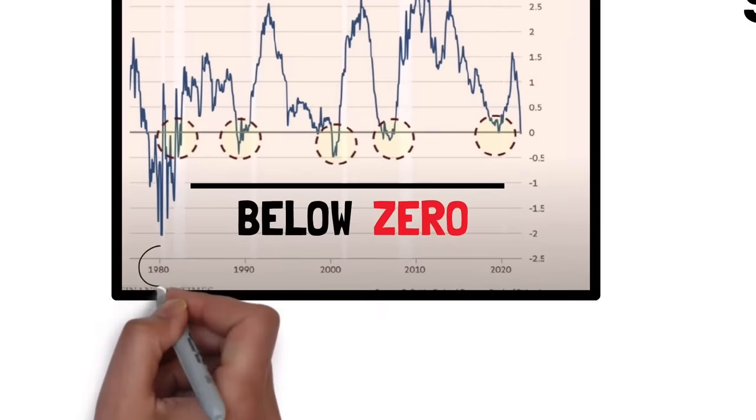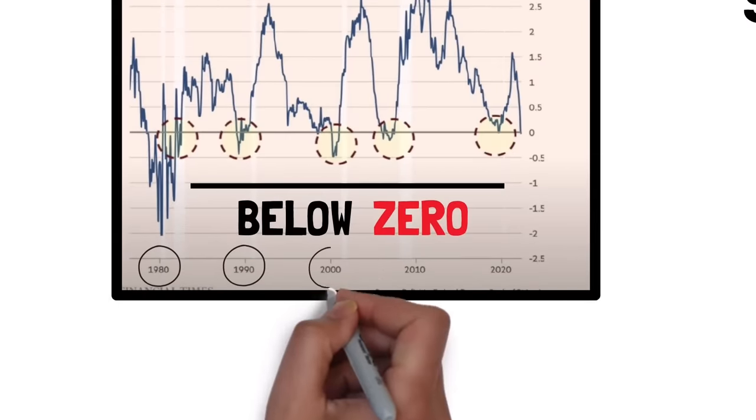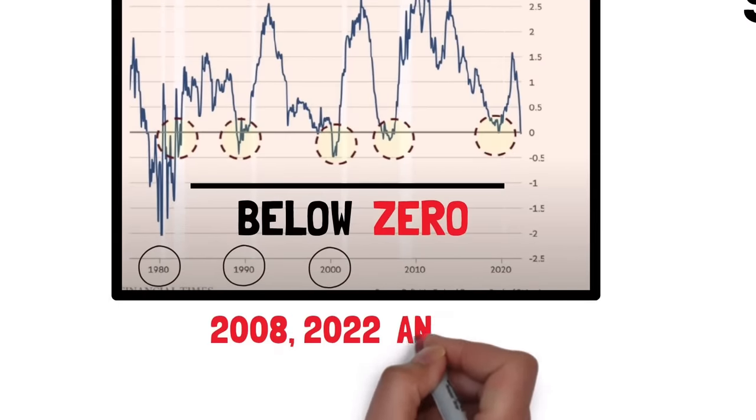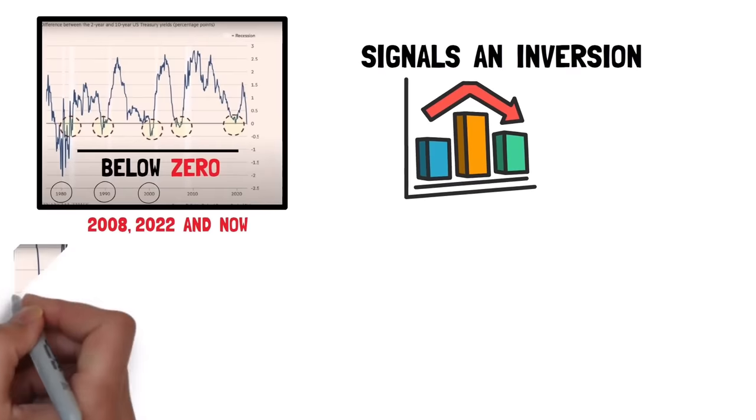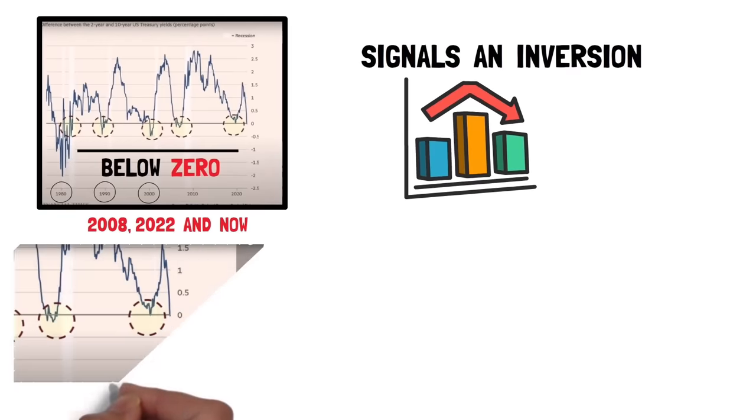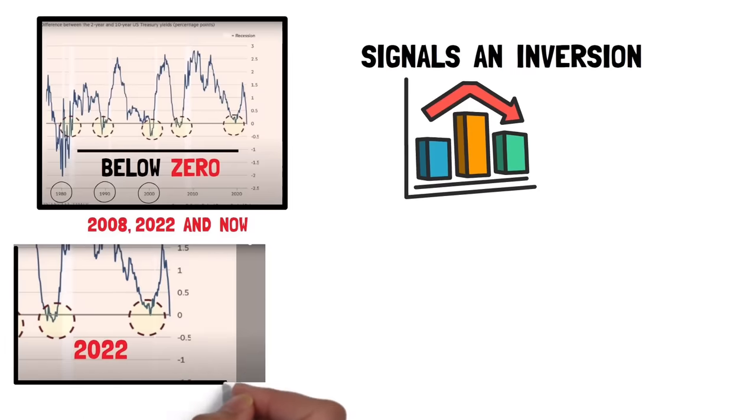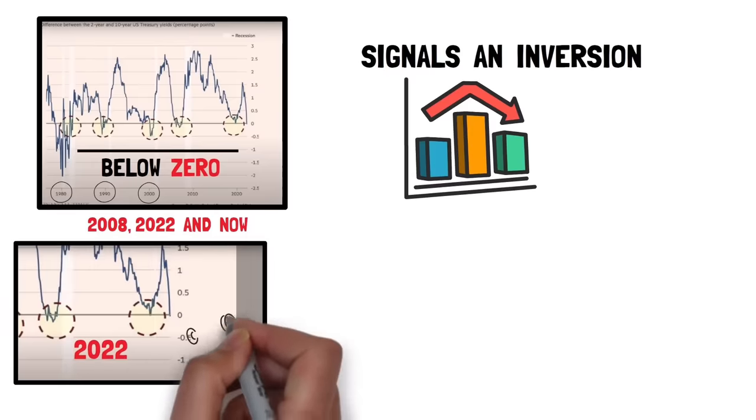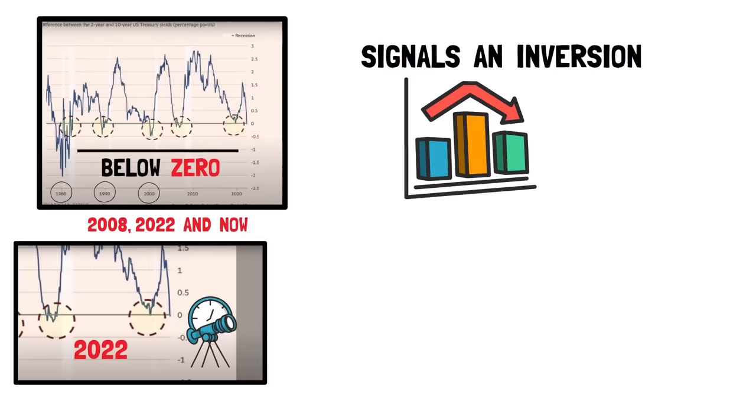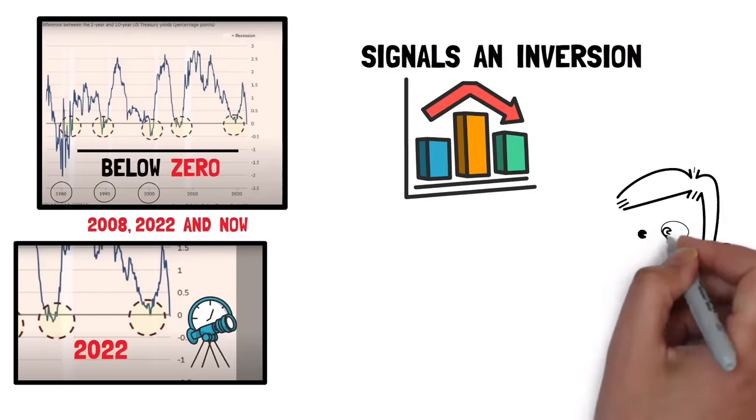This was true in the early 80s, early 90s, early 2000s, 2008, 2020, and now. If you zoom in, you can see the problem. This chart is from 2022, so it doesn't show the new developments, but essentially we have gone even deeper in the inversion and are now starting to come back up.